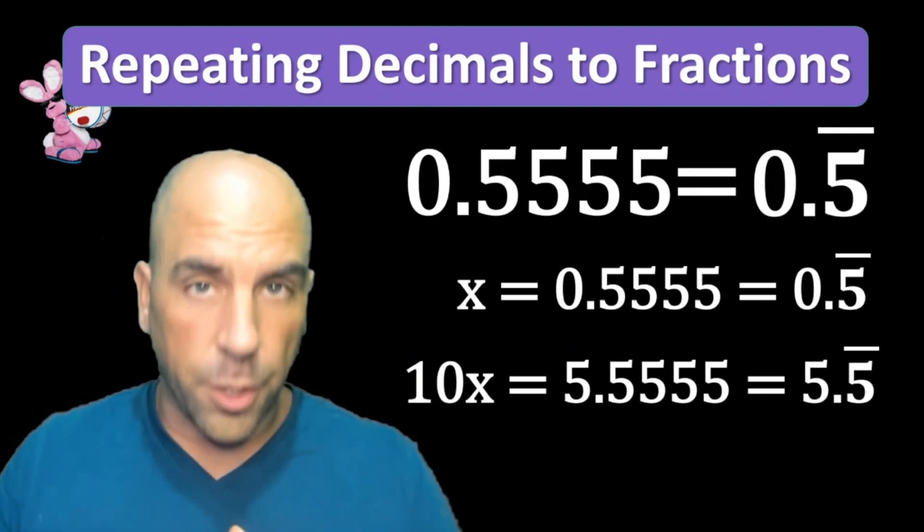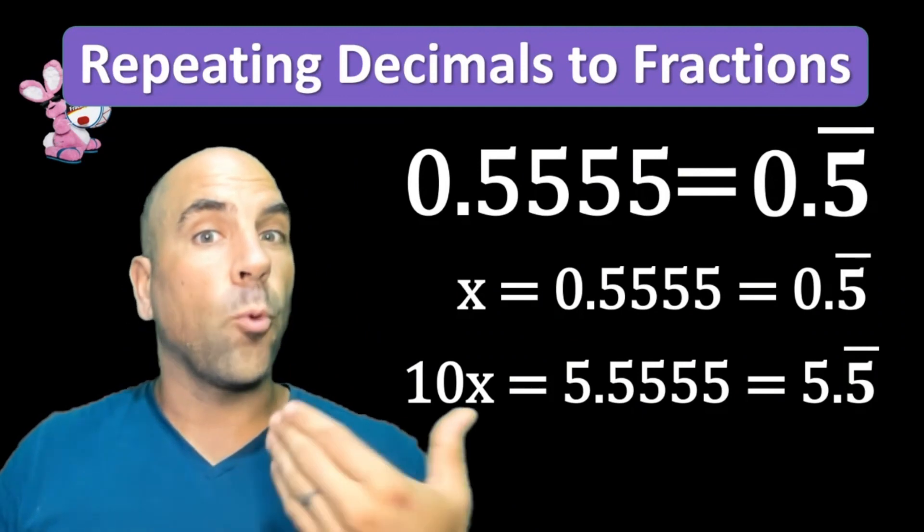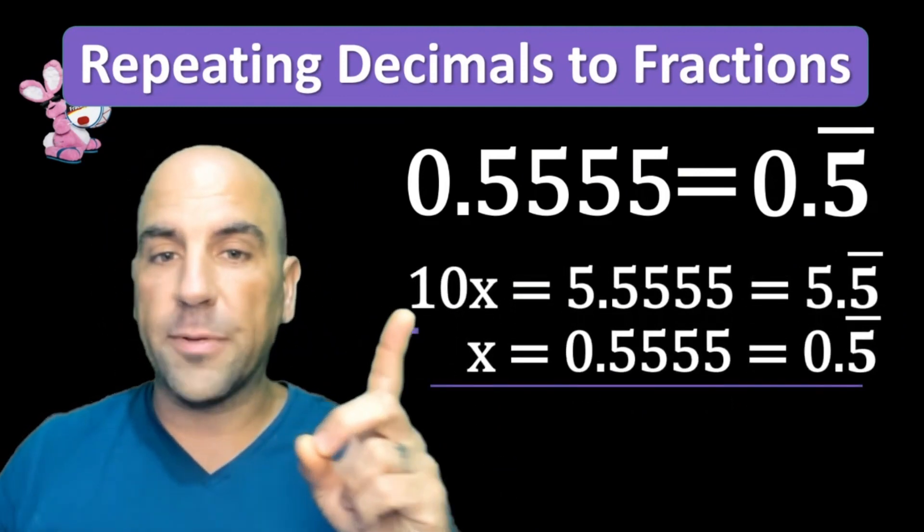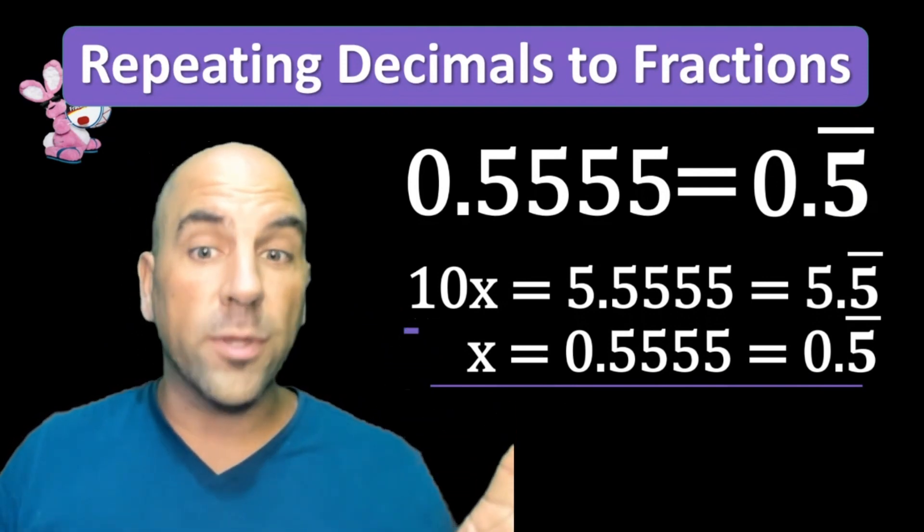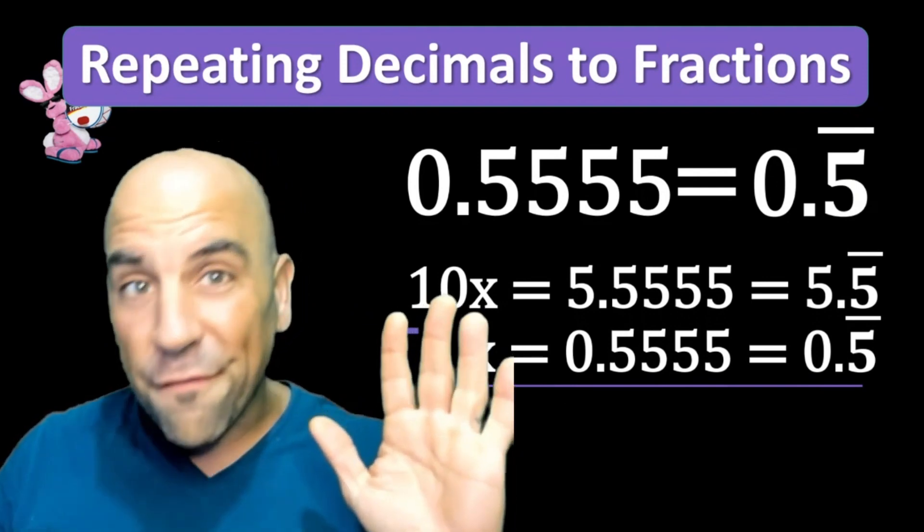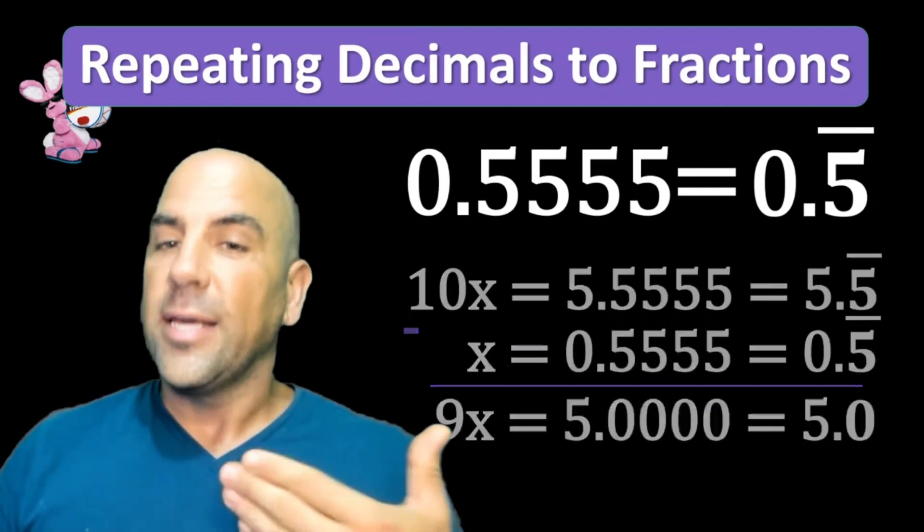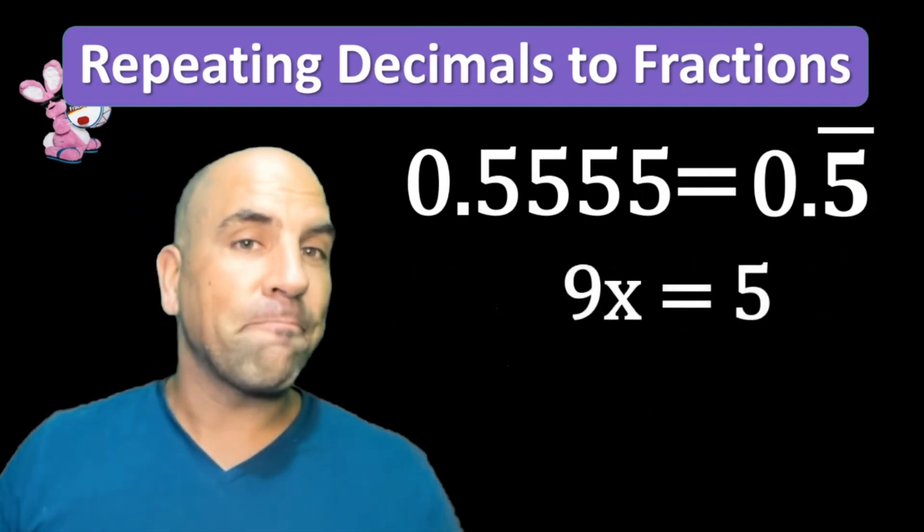Now what we can do is subtract the two of these. Look what happens when we subtract—we're going to get 9x, and that's going to equal 5 without the repeating decimal. I bet you can see where this is going—it's going to turn into a fraction.